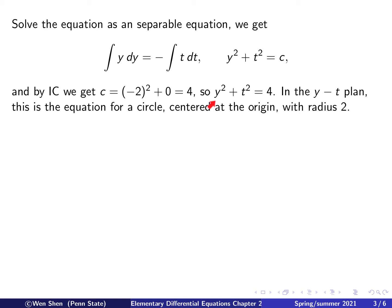So we have the implicit solution y squared plus t squared equals 4. We recognize now that this equation describes a circle in the y-t plane centered at the origin, and the radius would be square root of 4, which is 2.